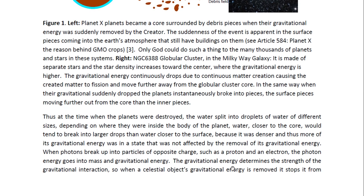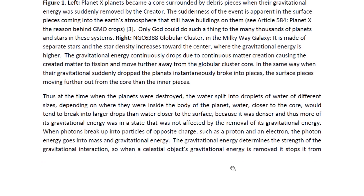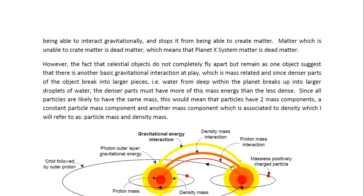When photons break up into particles of opposite charge, such as a proton and an electron, the photon energy goes into mass and gravitational energy. The gravitational energy determines the strength of the gravitational interaction. So when a celestial object's gravitational energy is removed, it stops it from being able to interact gravitationally and stops it from being able to create matter. Matter which is unable to create more matter is dead matter, which means that Planet X system matter is dead matter.